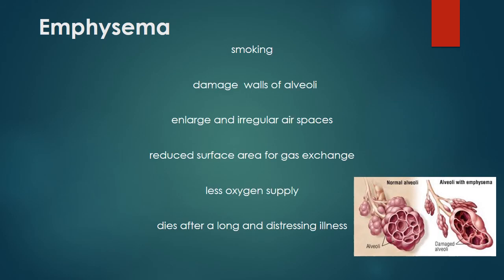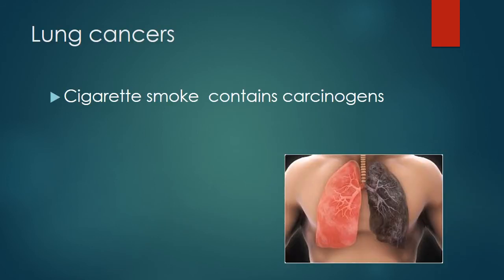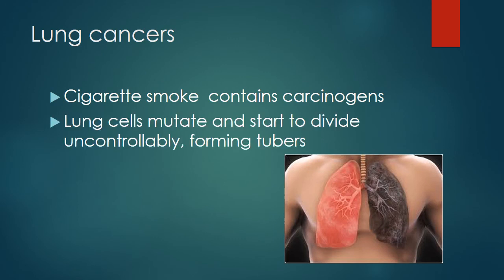Emphysema: smoking damages the walls of the alveoli, enlarging them into irregular air sacs. This reduces the surface area available for gas exchange, causing less oxygen to be supplied to the body. People with emphysema suffer from breathlessness and distress. Regarding lung cancer: cigarette smoke contains carcinogens that cause lung cells to mutate and develop uncontrollably, forming tumors, which leads to lung cancer.